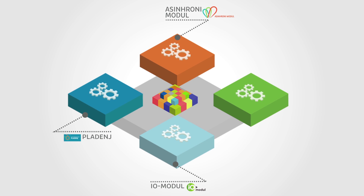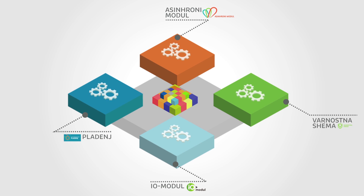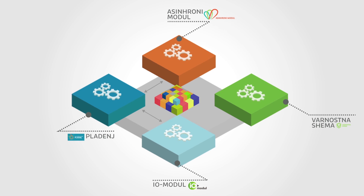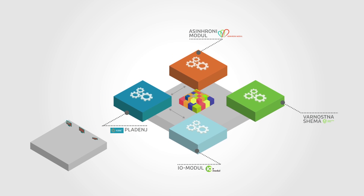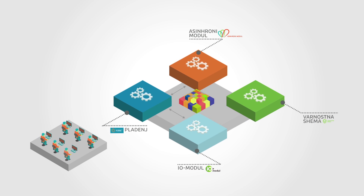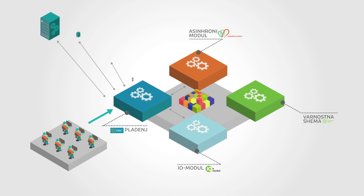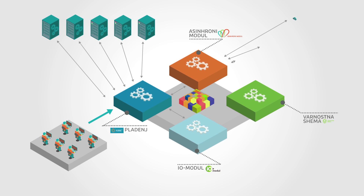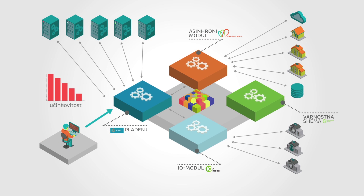Examples of this include building blocks for electronic data inquiries: tray, IO module, asynchronous module and the security platform. If an institution wants to electronically gather data from data sources, it can use these building blocks and their functionalities.